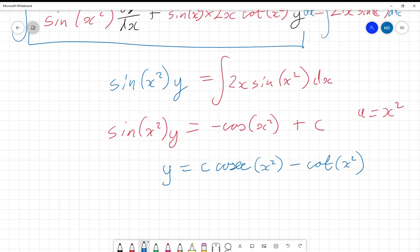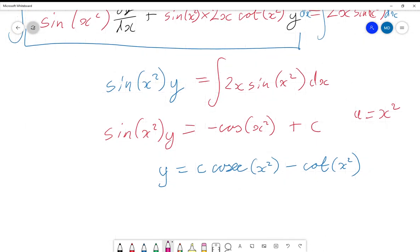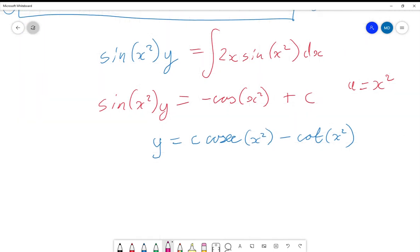But this was a particular solution we're looking for. This here is a general solution we've got right now, and we're looking for a particular solution so we need to apply our initial condition that y = 0 when x = √(π/4).